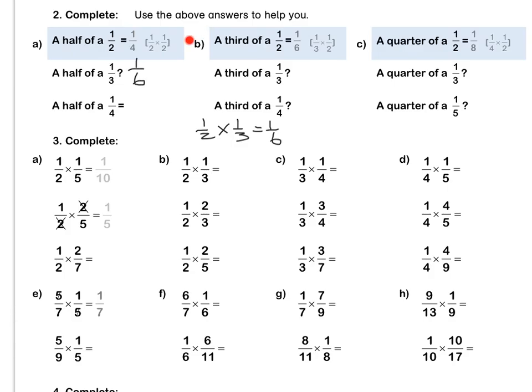Let's look at B together. A third of a half is the same as a third times a half, which is one sixth. Therefore, a third of a third is the same as a third times a third, which is one ninth. Lastly, Question C: a quarter of a half is the same as a quarter times a half, which is one eighth. Press pause to complete question 2 by yourself.